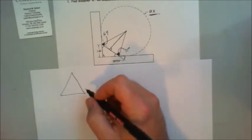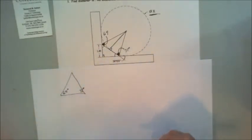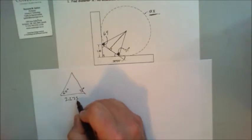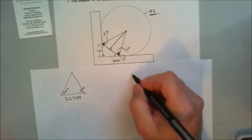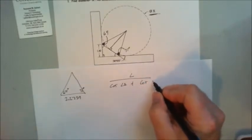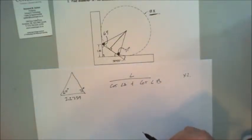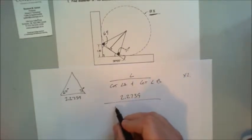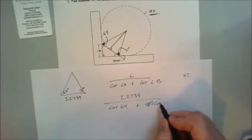We know that this guy here is 71. We know that this guy here is 64 degrees. And we know that this base length here is 2.2739. Our formula is our length over cotangent angle A plus cotangent angle B. And then afterwards it will be times 2 because we need twice the radius.